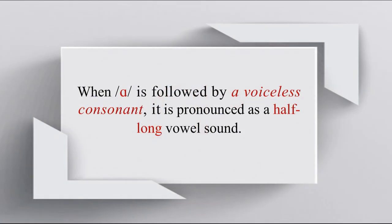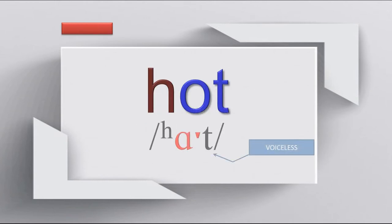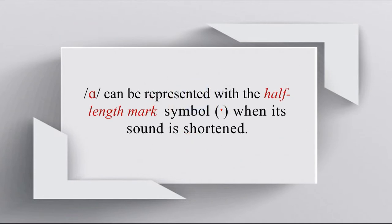When AH is followed by a voiceless consonant, it is pronounced as a half-long vowel sound. Hot. AH can be represented with a half-length vowel symbol when its sound is shortened.